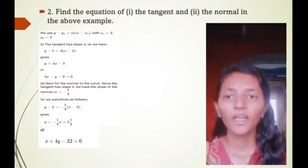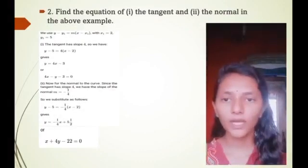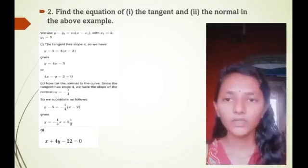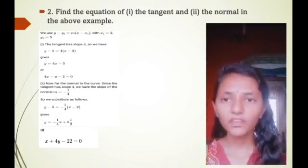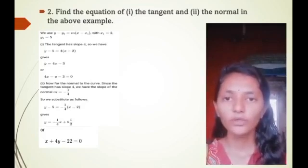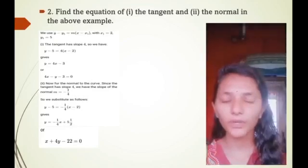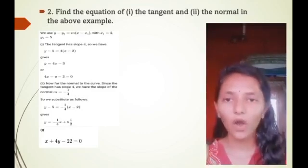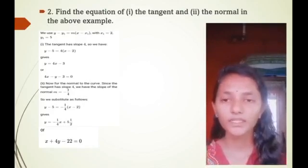We use y - y1 = m(x - x1) with x1 = 2 and y1 = 5. First, the tangent has slope 4, so we have y - 5 = 4(x - 2), which gives y = 4x - 3, or 4x - y - 3 = 0.